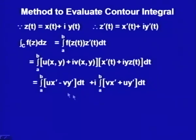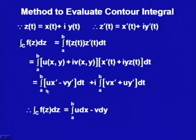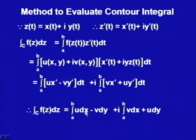Since all these are real quantities, u is a function of x and y, and x is a function of t, so u·x'dt can simply be written as u dx. We can write this as the integral of u dx − v dy. Similarly, the imaginary part is i times the integral of v dx + u dy. So we have: ∫u dx − ∫v dy + i·∫v dx + i·∫u dy.